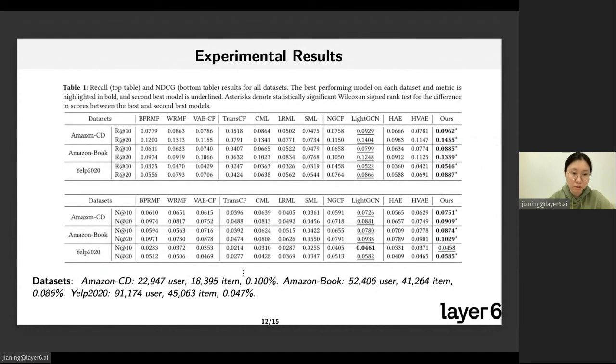Now I will present our experimental results. We run on three datasets: Amazon CDs, Amazon Book, and the new Yelp dataset released last year. We compare with these three datasets with various numbers of users, items, and sparsities.